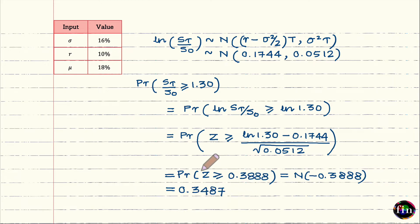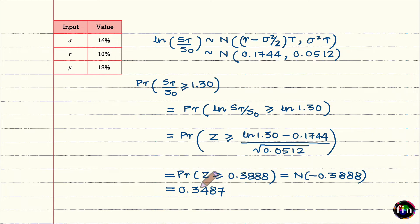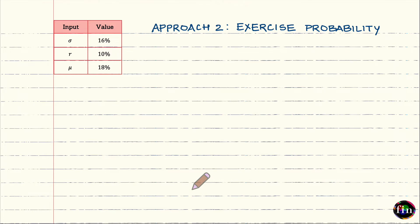So there is roughly a 35 percent chance that the final stock price after two years is at least 30 percent higher than today's stock price. That was Approach 1. Now let us move to Approach 2, which is actually very simple.